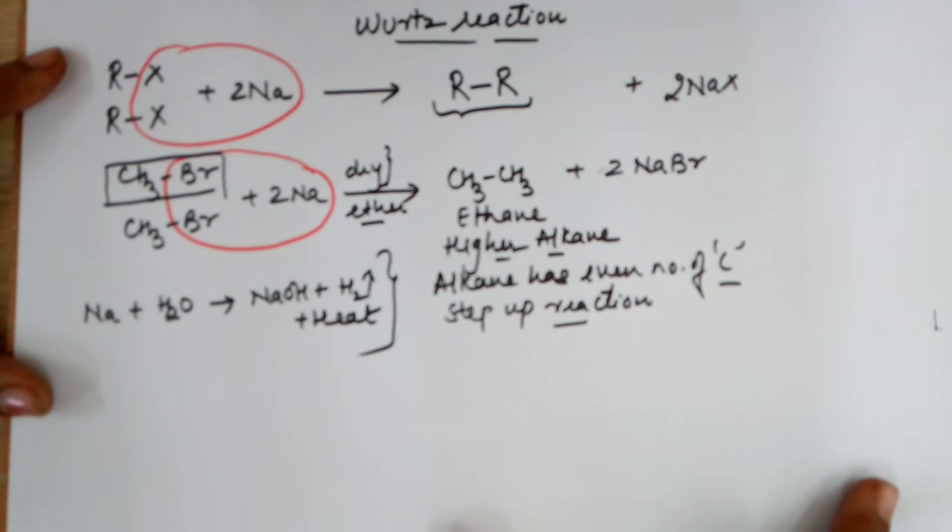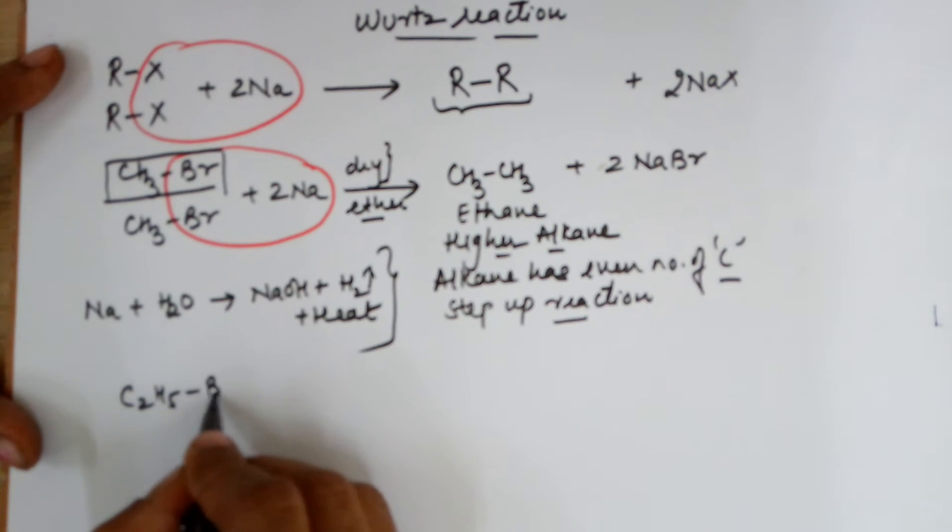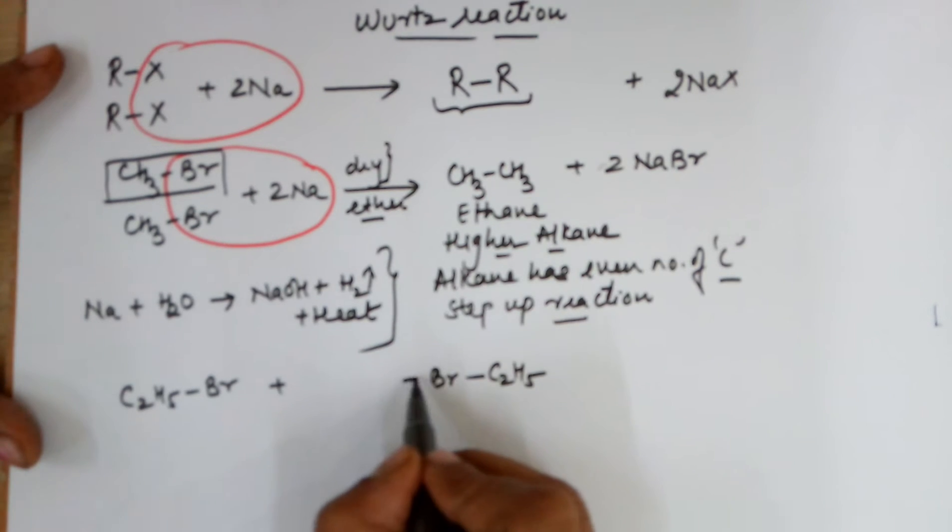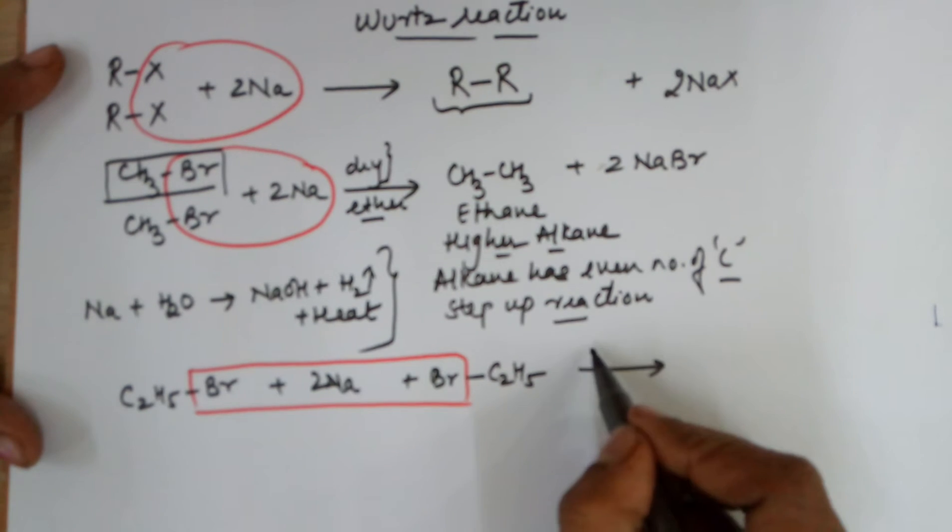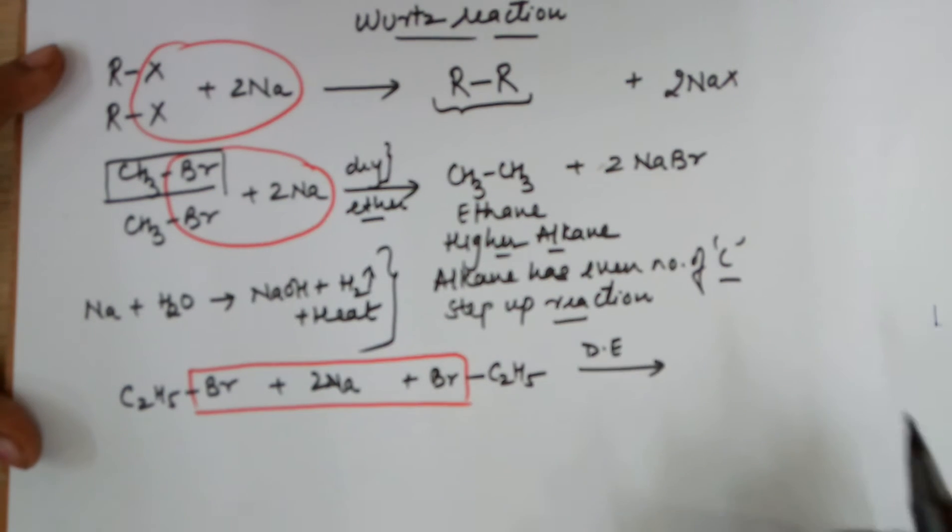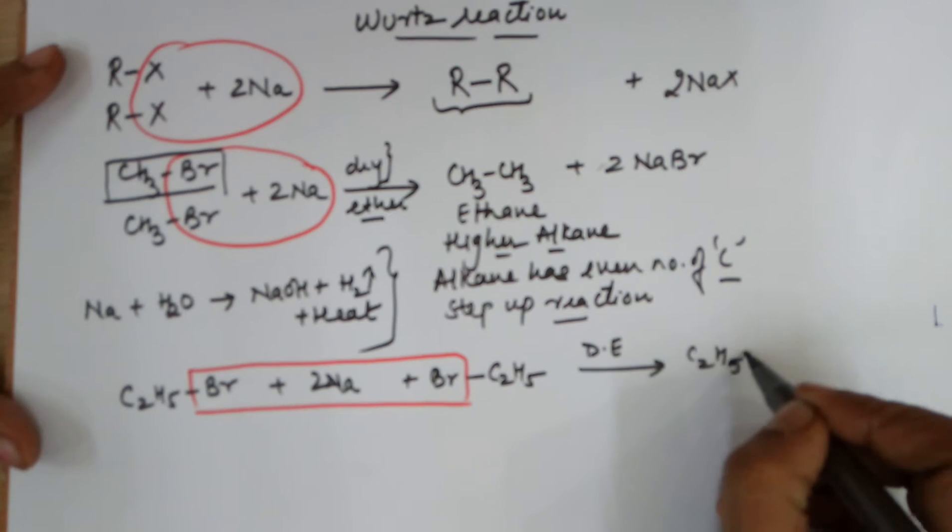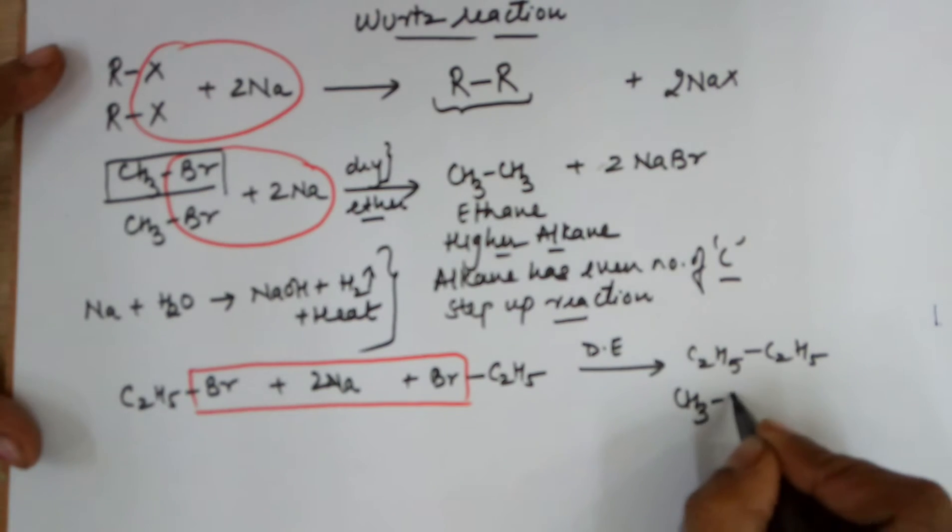I'll take another example of the same category. Instead of methyl, this time I am taking ethyl bromide which combines with another ethyl bromide and you have sodium metal. So again when you treat them, sodium metal takes away the halogens of both the compounds. I am using the abbreviated form of dry ether, DE. Your product formed would be C2H5 bonded to C2H5 which is nothing but CH3-CH2-CH2-CH3,